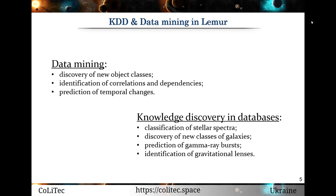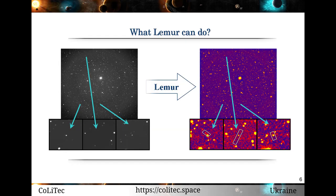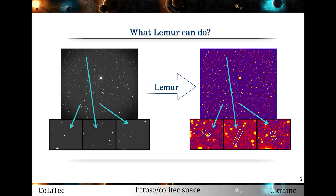There are different types of data mining and KDD tasks, like discovery of new objects, galaxy classes, identification of correlations, dependencies, gravitational lenses, prediction of changes in gamma ray bursts, and others. On this slide, you can see the results of frame processing by the Lemur software, with processed frames showing alignment and centered view on the right side. Also, detected moving objects are presented on the right side.